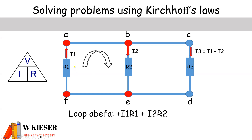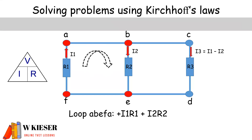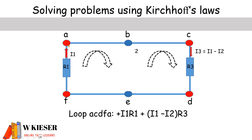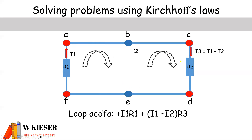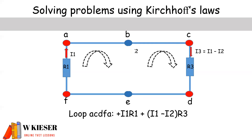You'll see that the volt drop across the first resistor will be I1 multiplied by R1, and it's in the same direction as the clockwise direction. We are looking at loop A, B, E, F, and A. Now if we take a look at the next loop, which is A, C, D, F, and A, you'll notice that we have I1 times R1 in a clockwise direction. And we have I1 minus I2, which is also in a clockwise direction, so that's going to be positive.